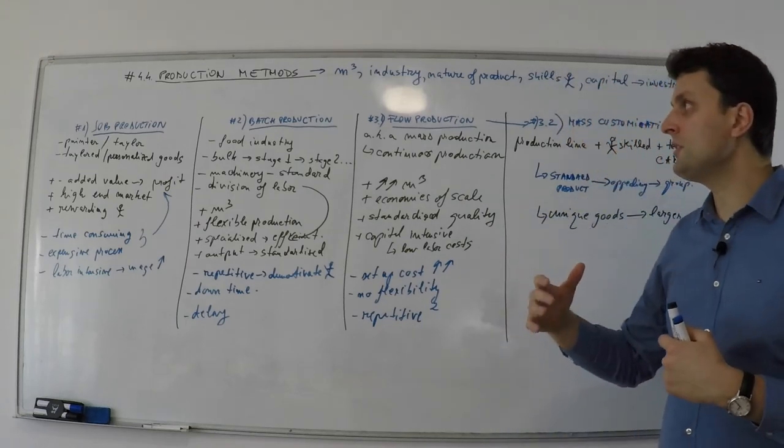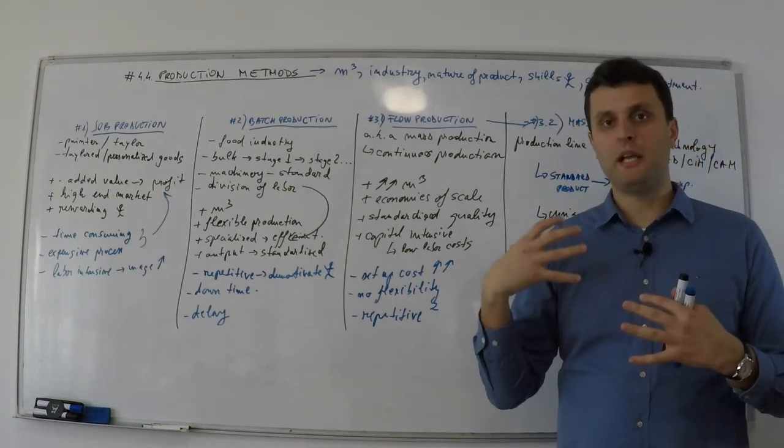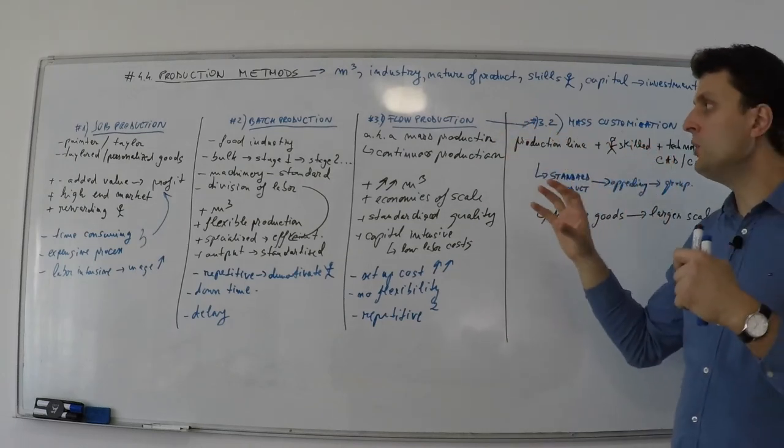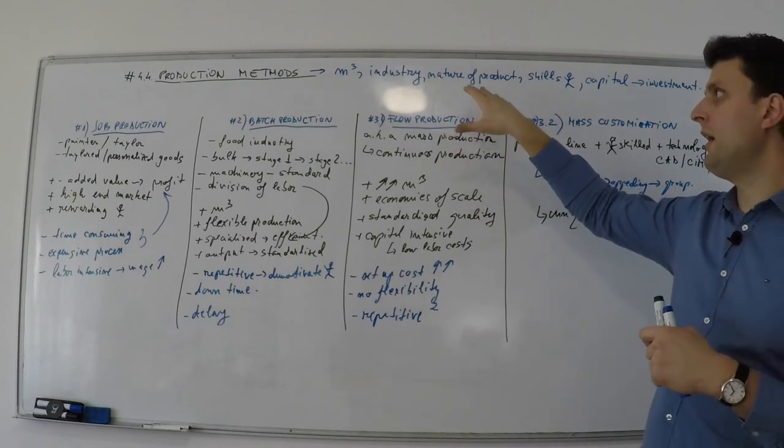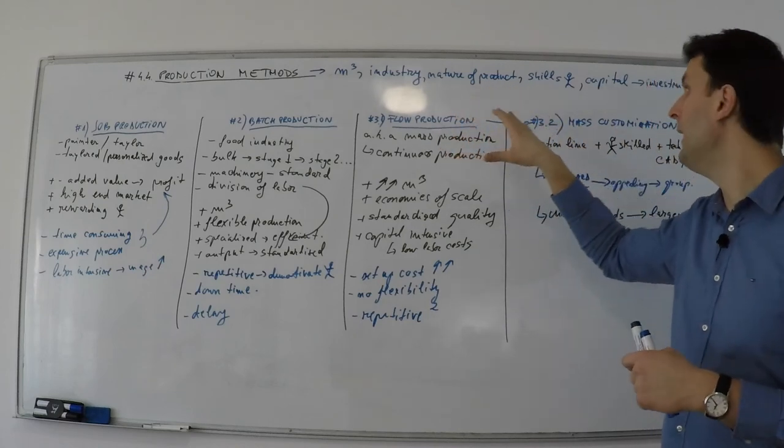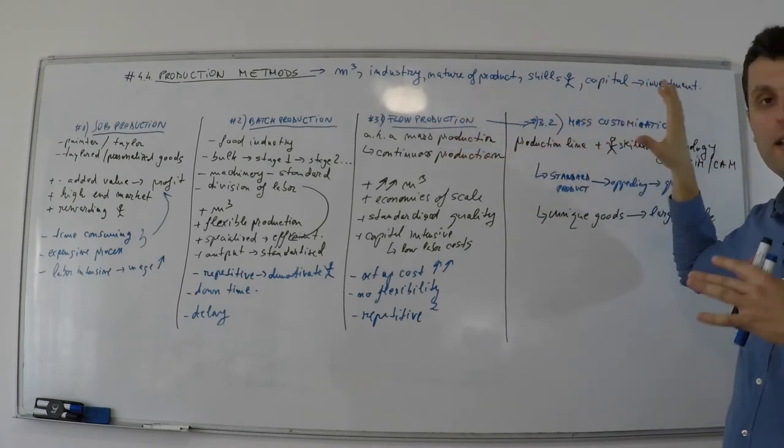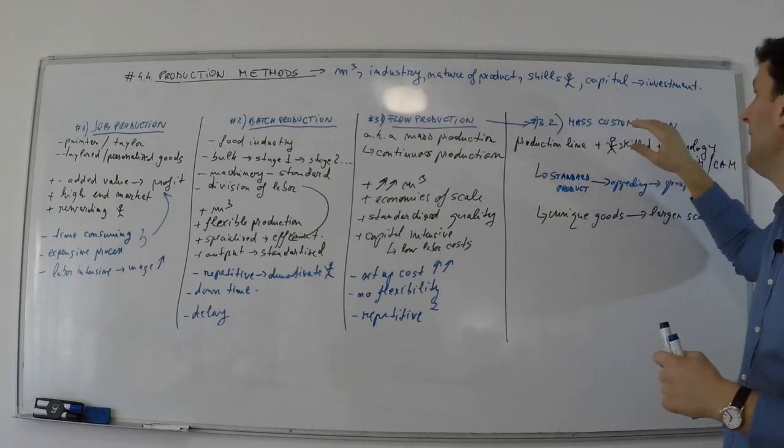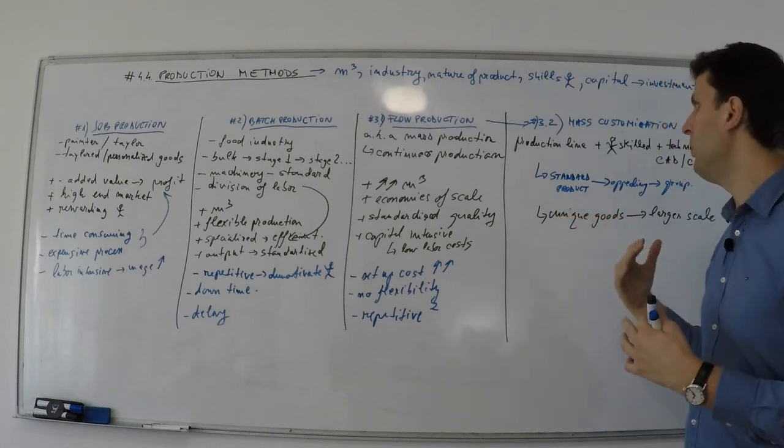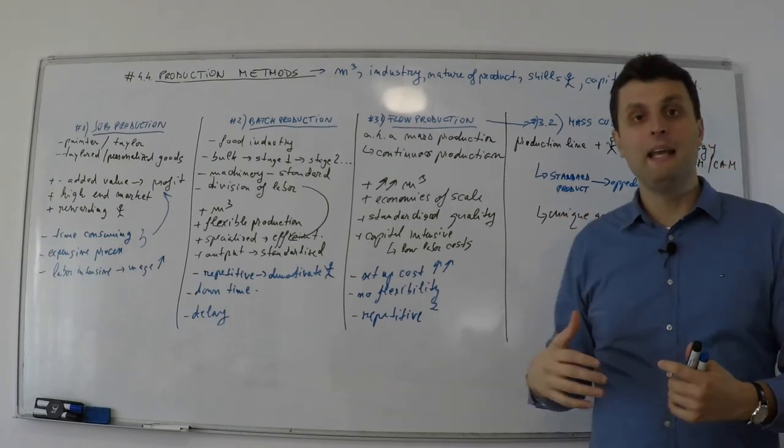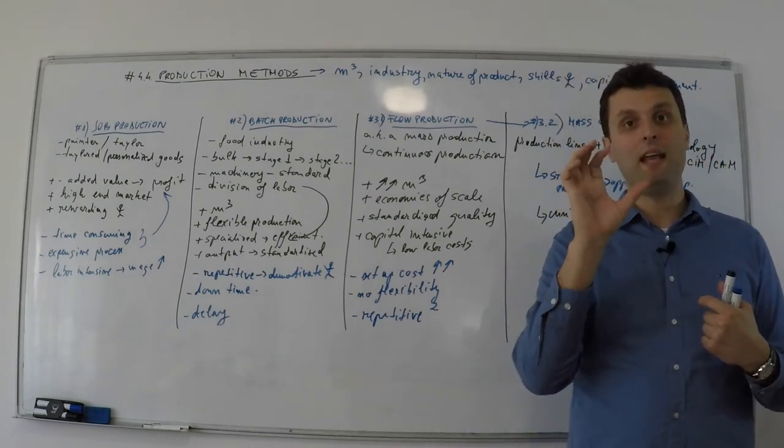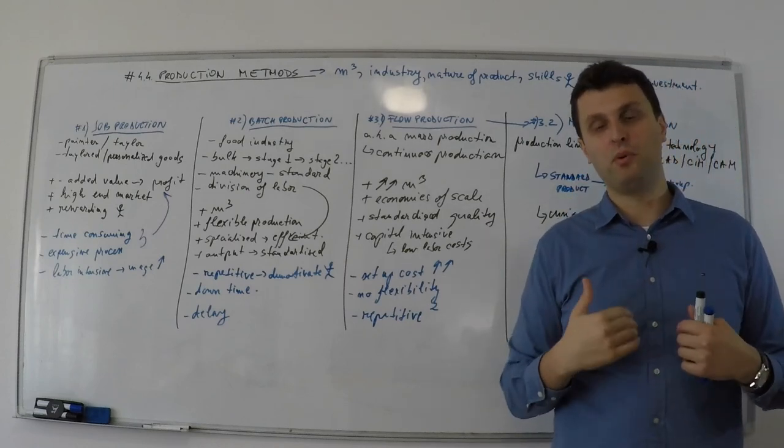So this being said, just taking in consideration that when you choose your production method, one of these four that we discussed, it's all about looking in your own backyard, what volume you want to produce, in which industry you're activating, what kind of product you're aiming to do, what kind of people you have working with you, with what skills that can help you to do that, and what capital you have to invest. And this is the way in which you will choose from job, batch, flow, or mass customization. This being said, this is Mr. Darius. Thank you for watching this video, and don't forget, if you have any business query, just drop me a line, and I'll help you pull it through. Thank you.